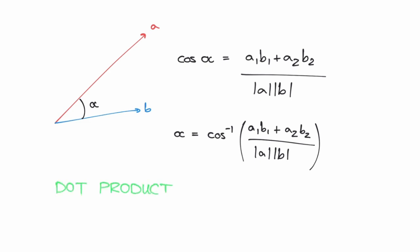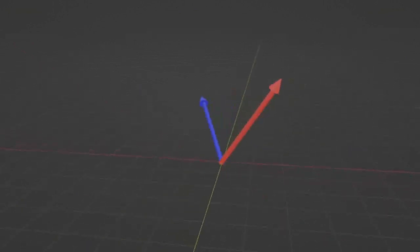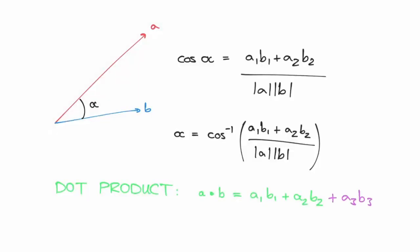This expression here, A1B1 plus A2B2, is so important that it has a name, the dot product. What's cool about the dot product is that you can also use it to find the angle between two vectors in 3D space. You just need to add on a third term, A3B3, which corresponds to the third dimension.